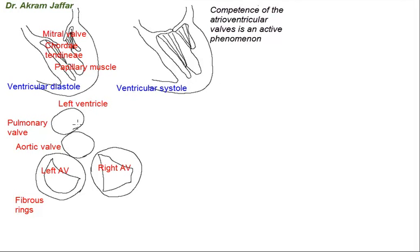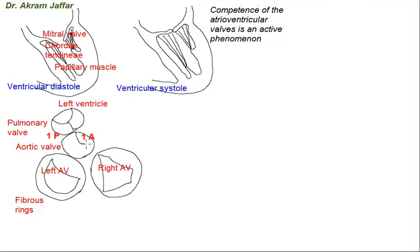Now let's deal with the competence of the semilunar valves — the pulmonary and the aortic valve. These valves are guarded by three semilunar cusps. In the pulmonary valve, there is one posterior and two anterior cusps. In the aorta, there are again three cusps, but there is one anterior and two posterior cusps.